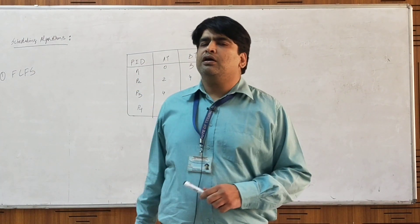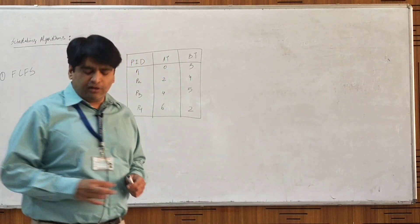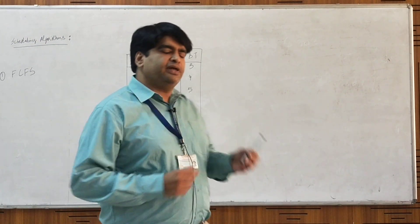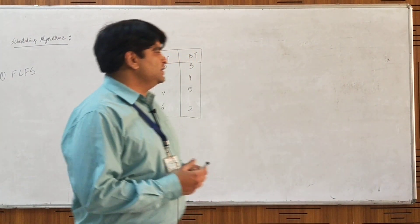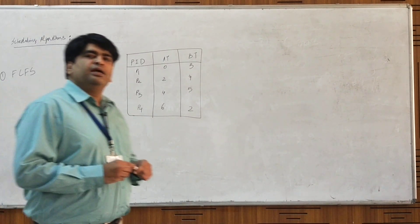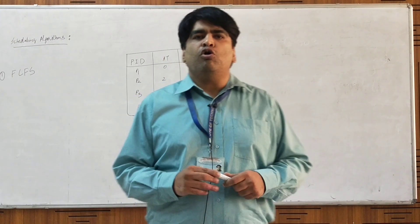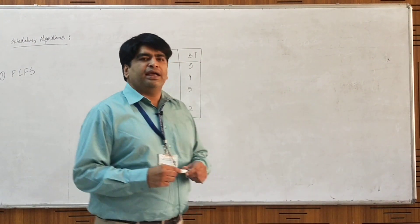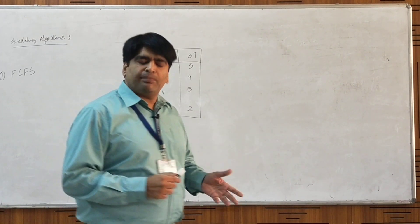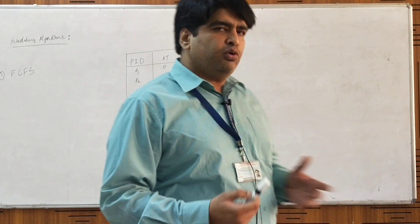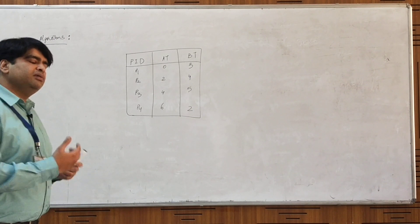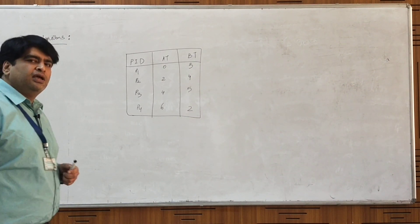Good morning everyone. Continuing from our last lecture, today we are going to discuss the scheduling algorithms that an operating system can employ to schedule the different processes. As we all know, the processor is a very rare commodity in a computer system. All the processes strive for a CPU and make requests for the use of CPU, but most systems carry only one central processing unit or processor, so it can only be allocated to one process at a time. We have different scheduling algorithms to implement those.